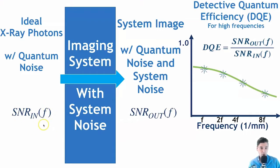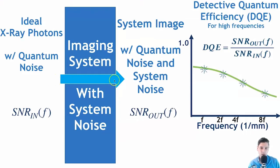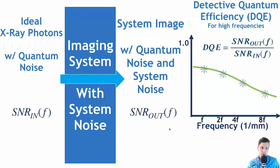We have the signal-to-noise ratio coming in right before the x-rays hit the detector. Then we have an imaging system that will introduce blur and additive noise. On the output, we get the actual system image, which contains the initial quantum noise as well as noise from the detector and any processes used to convert x-ray photons into the measured signal. What we get is the signal-to-noise out, again as a function of spatial frequency.